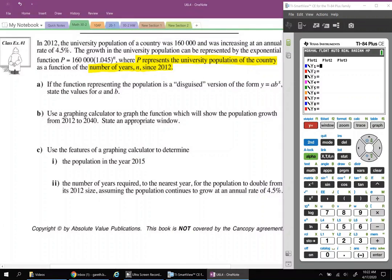The first question: if the function representing the population is a disguised version of y equals a times b to the power of x, state the values for a and b. So when we compare y equals a times b to the power of x to this population function that they've created for us, we can see that the coefficient out front, the a value, is 160,000. And our b value is equal to the base of our power, so 1.045.